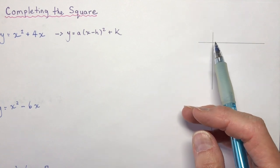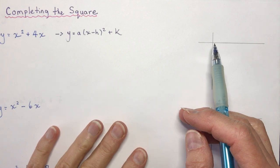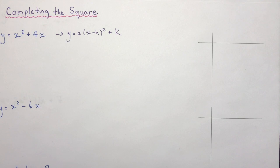In this lesson I'm going to teach you how to complete the square. It sounds much more complicated than it is, and I'm sure that by the time we're done you're going to have it all figured out. So first of all, why do we want to complete the square? You want to complete the square because you want to be able to find the vertex of your parabola or the maximum or minimum values of a quadratic.